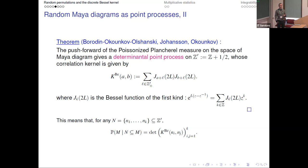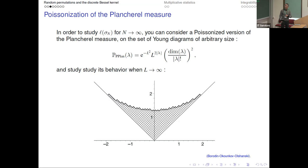At a certain point I will send l to infinity — this corresponds to studying random permutations with n very large, and it leads to the Tracy-Widom distribution.